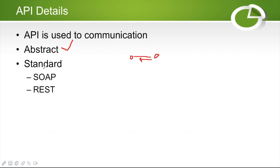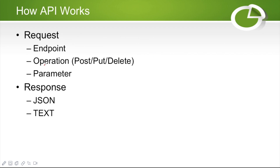For sending data using an API, the first thing you need is the endpoint. An endpoint means where you are going to get the data from. For example, if I'm trying to get data from Facebook, Facebook is my endpoint. If I'm trying to get data from Google, Google is my endpoint. The endpoint is simply where you try to hit and where you try to get your data.